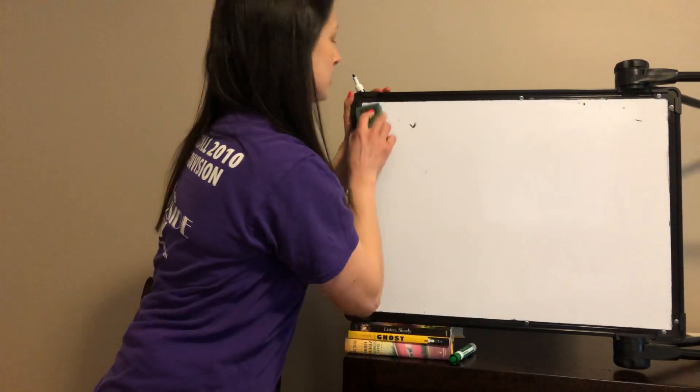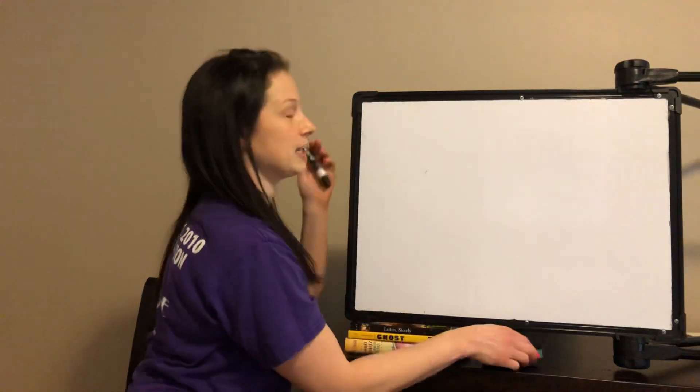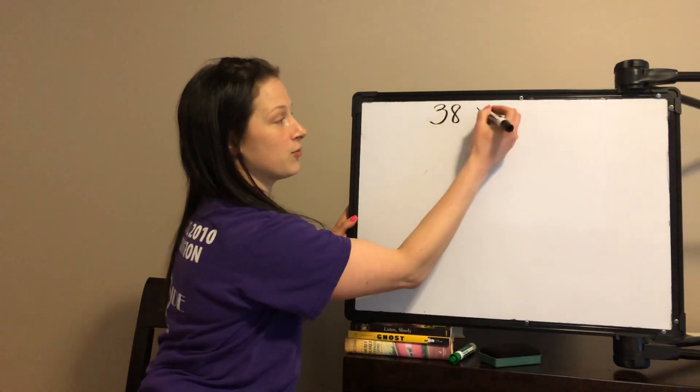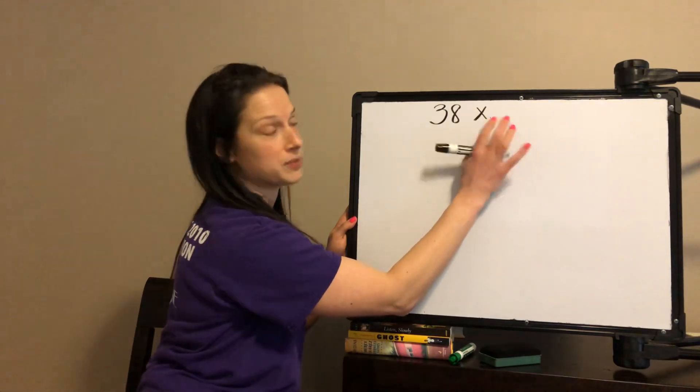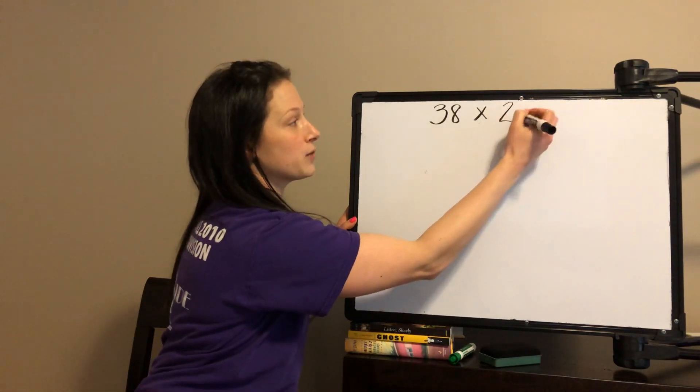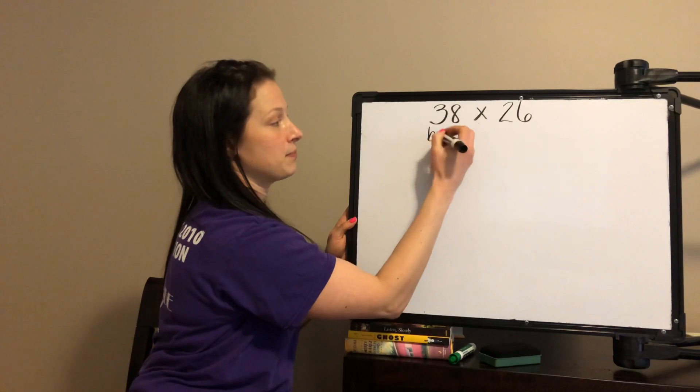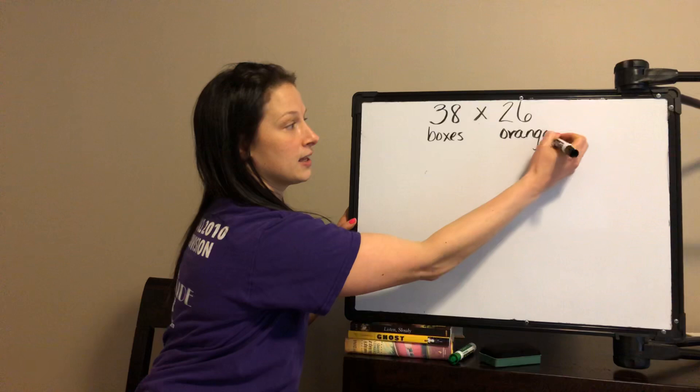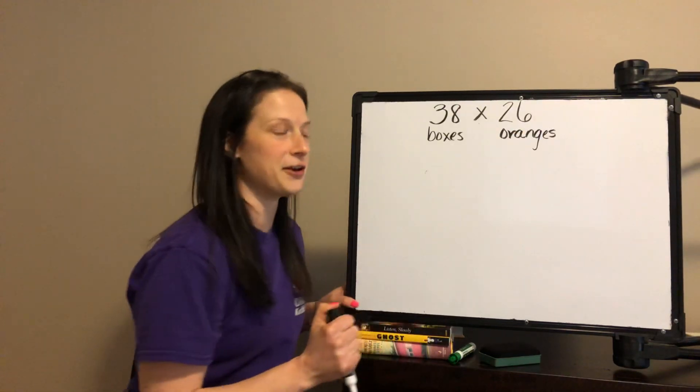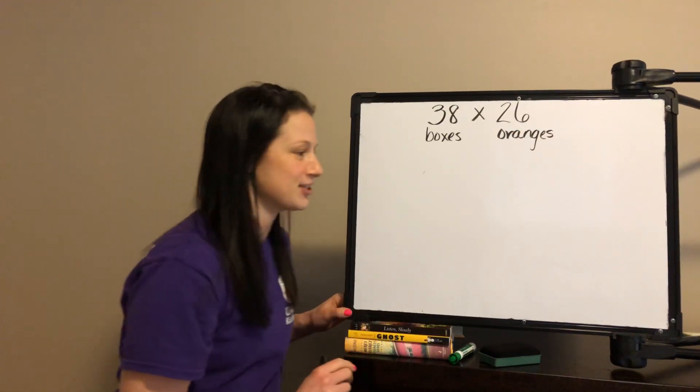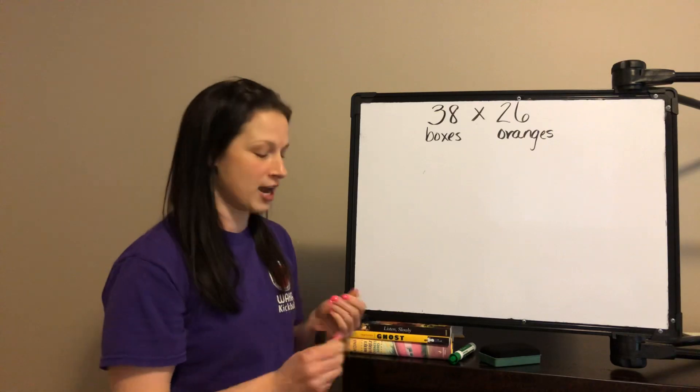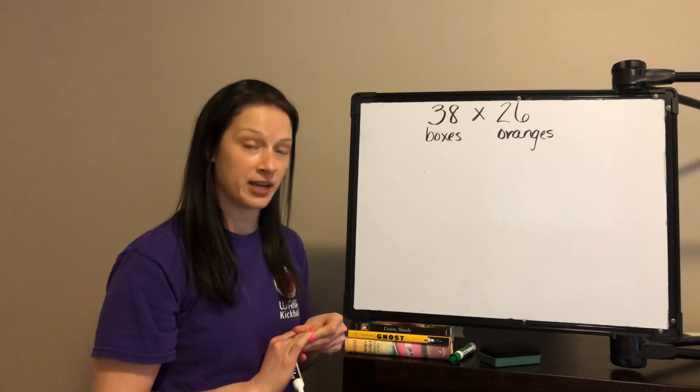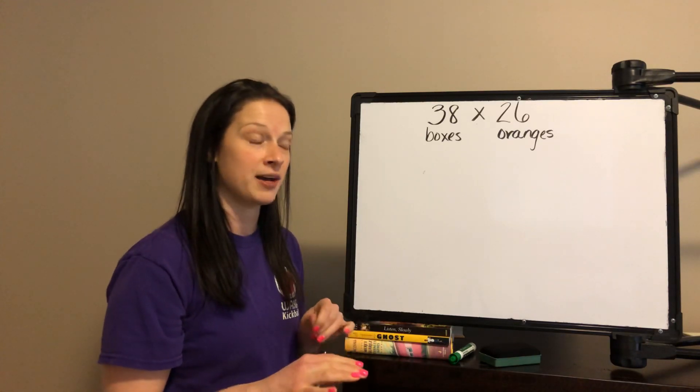So let's think about 38 groups of 26. So 38 boxes of 26 oranges. And I'm going to see if I can fit all three strategies on here. It might be kind of tough, but let's give it a try. So the first strategy that I want to talk about is breaking both numbers apart. I'm going to show that on the area model.